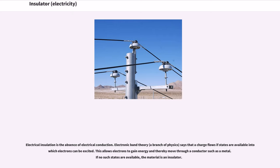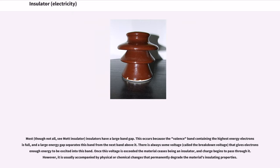Electrical insulation is the absence of electrical conduction. Electronic band theory, a branch of physics, says that a charge flows if states are available into which electrons can be excited. This allows electrons to gain energy and thereby move through a conductor such as a metal. If no such states are available, the material is an insulator.